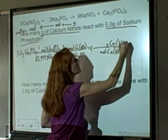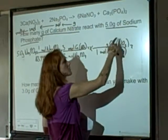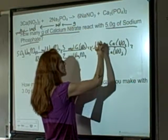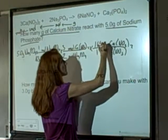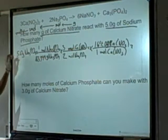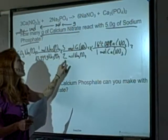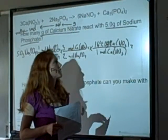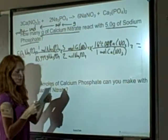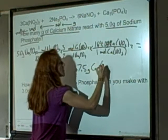So Ca(NO3)2 — I find out how much 1 mole weighs by adding up 1 calcium, 2 nitrogens, and 6 oxygens, which we did earlier: 164.094 grams for every 1 mole. So 5 grams divided by 163.944, times 3 divided by 2, times 164.094 — and I got 7.5 grams of calcium nitrate.